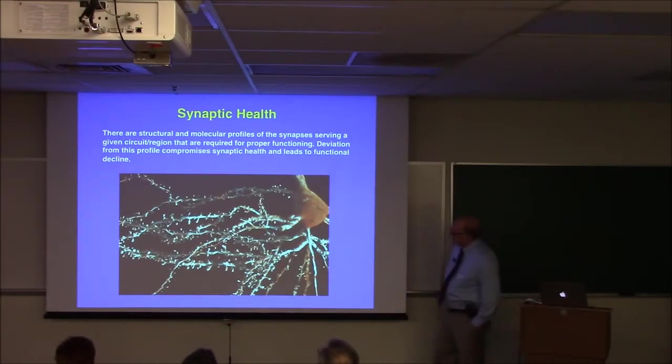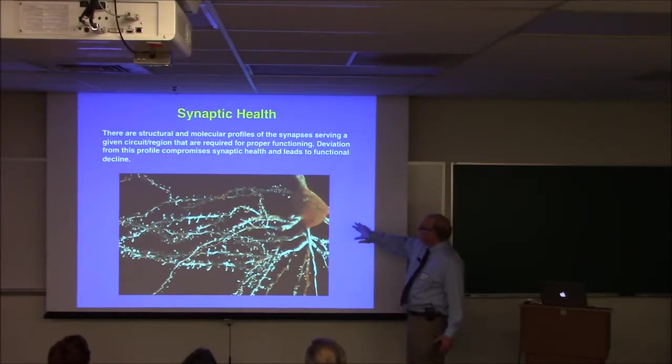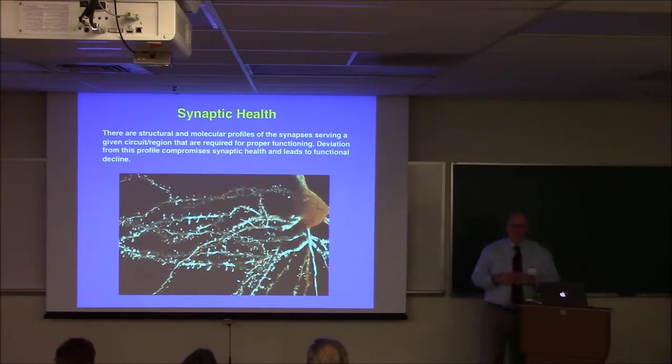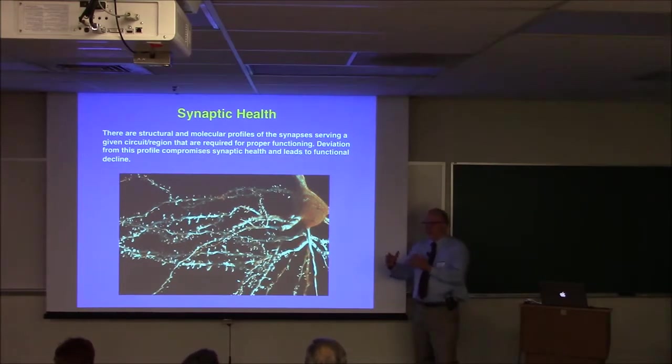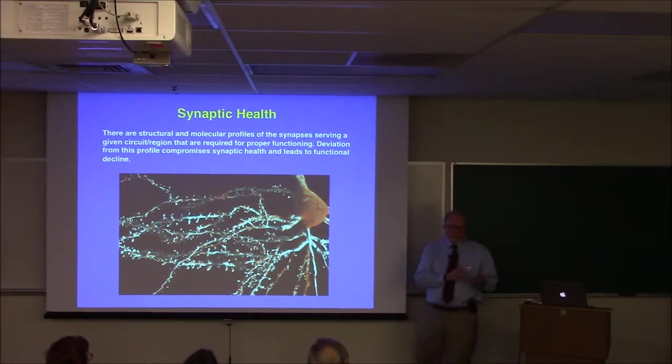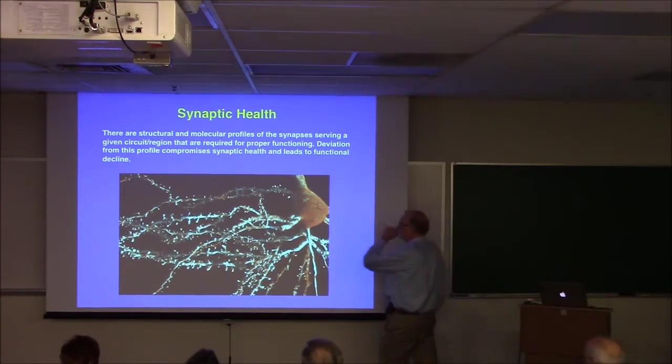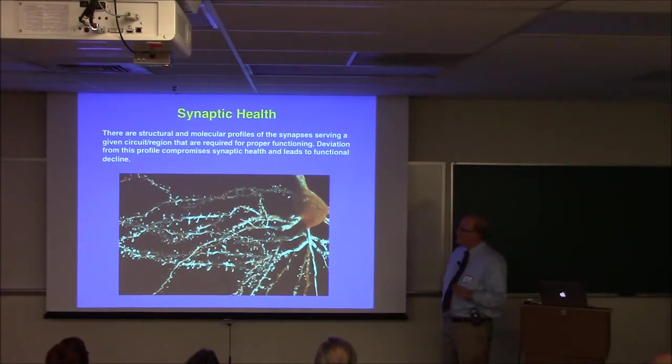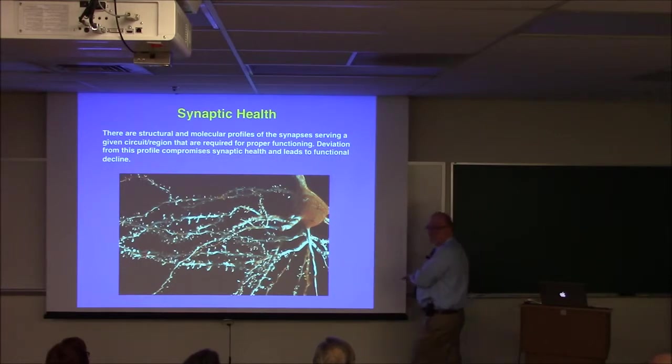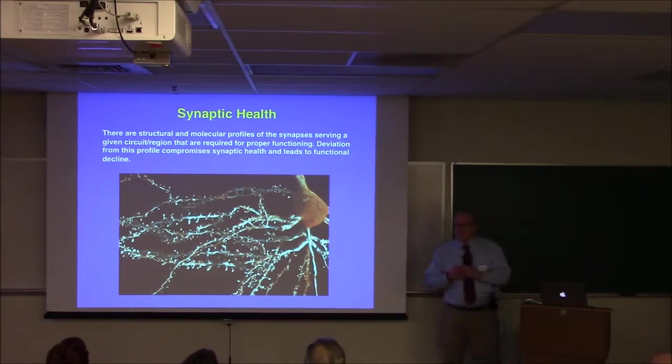Okay, here's my favorite picture. This is a nerve cell. A neuron. And we have started to use this term synaptic health over the last several years. First of all, it's more optimistic. I'd rather talk about synaptic health and the loss of synaptic health than synaptic decline as our object of study. Because what you really want to do in the end is retain synaptic health. So, there are structural molecular profiles of the synapses serving a given circular region, such as prefrontal cortex, that are required for proper function. So, deviation from that profile compromises synaptic health, and that leads to functional decline. So, this may be a little synaptocentric, but it's pretty much the case that you really have to keep your synapses healthy to remain cognitively healthy.